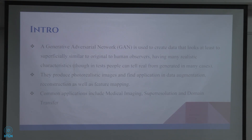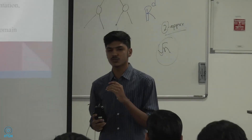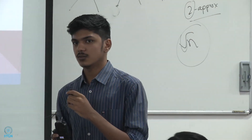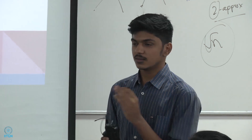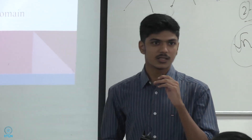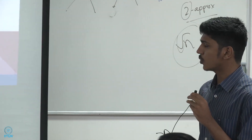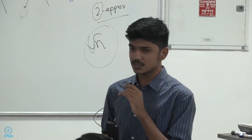GAN is basically used to create fake data such that photorealistically it seems like it's a real thing, but at the same time the numerical values are very different from what the real data is, though it perceptually seems that it's the same thing. It's used in a lot of ways for data augmentation and also in unsupervised or semi-supervised tasks. Specific applications include medical imaging, super resolution, and one of the biggest buzz these days is domain transfer.